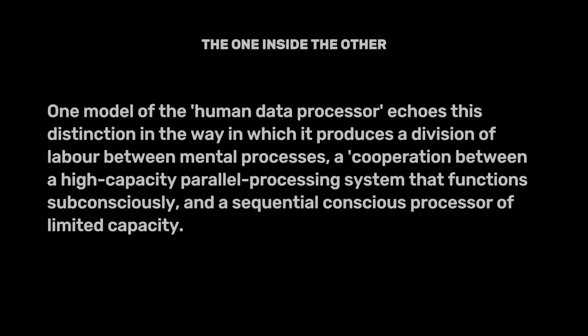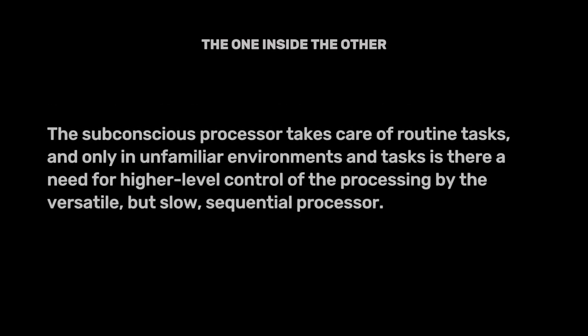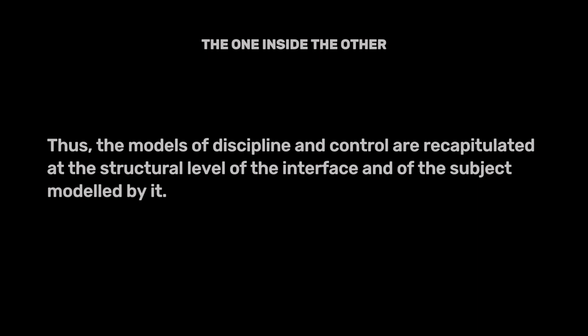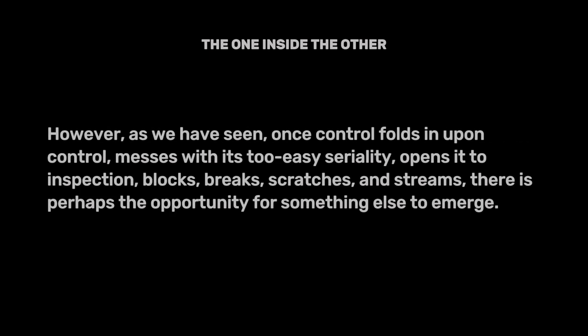One model of the human data processor echoes this distinction in the way it produces a division of labor between mental processes — a cooperation between a high-capacity parallel processing system that functions subconsciously, and a sequential conscious processor of limited capacity. The subconscious processor takes care of routine tasks, and only in unfamiliar environments and tasks is there a need for higher-level control by the versatile, but slow, sequential processor. Thus, the models of discipline and control are recapitulated at the structural level of the interface and of the subject modeled by it. However, once control folds in upon control, messes with its too-easy seriality, opens it to inspection, blocks, breaks, scratches, and streams — there is perhaps the opportunity for something else to emerge.